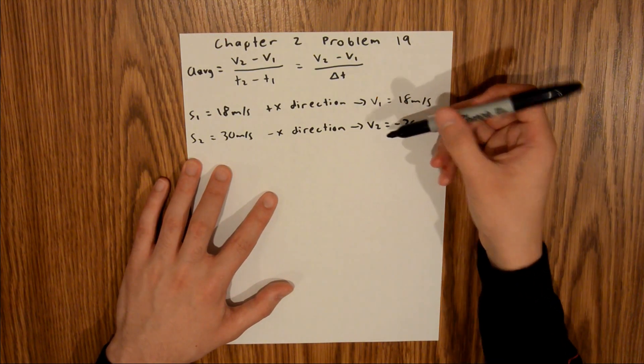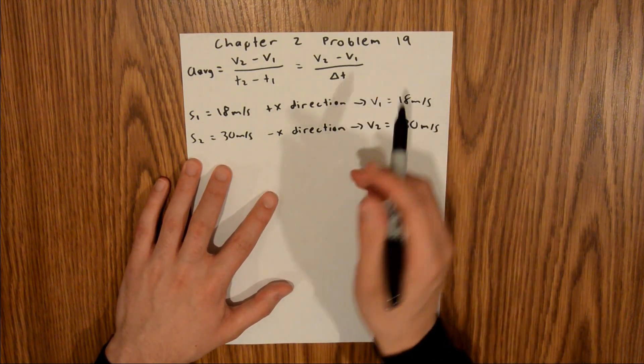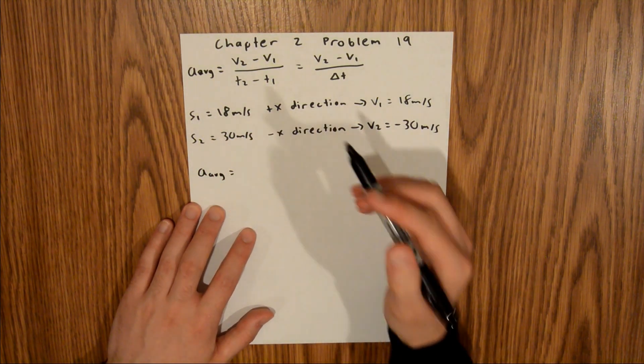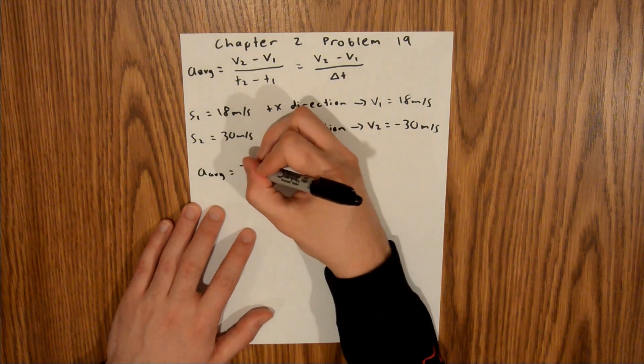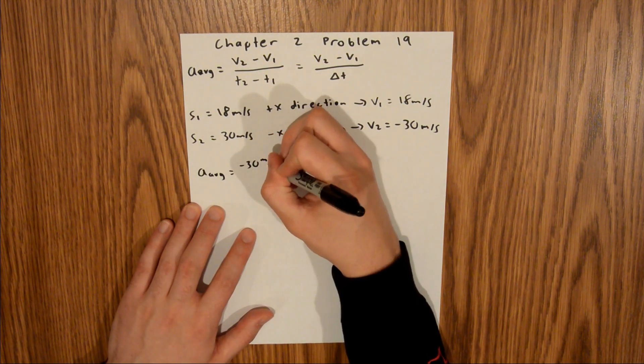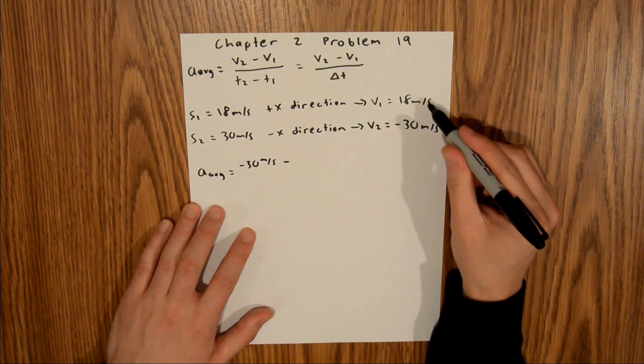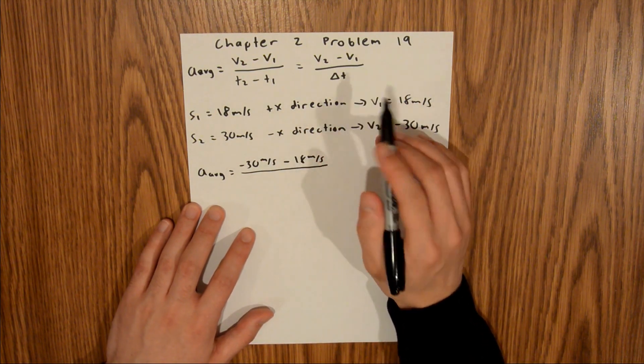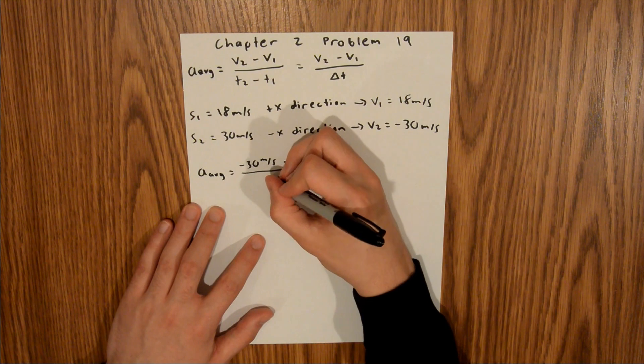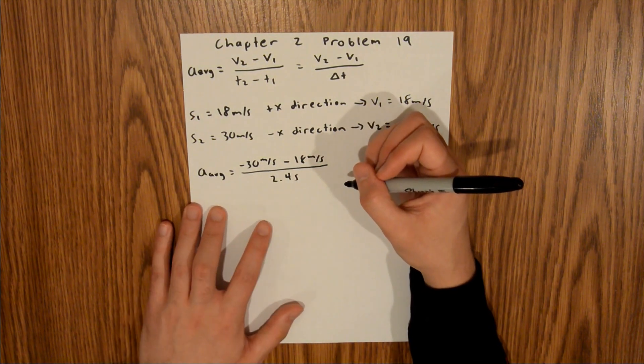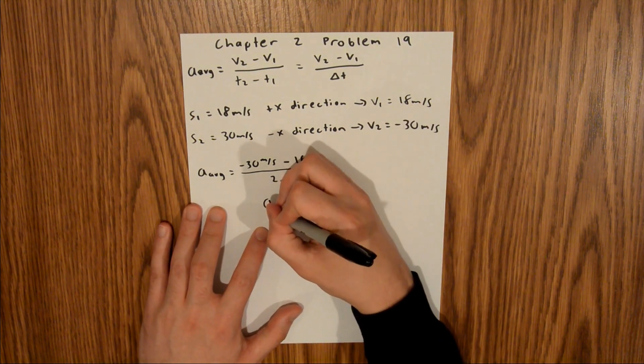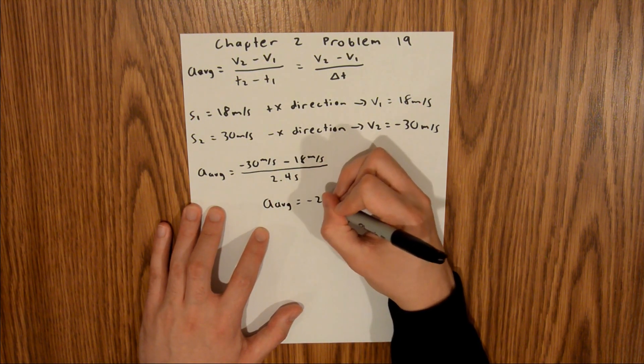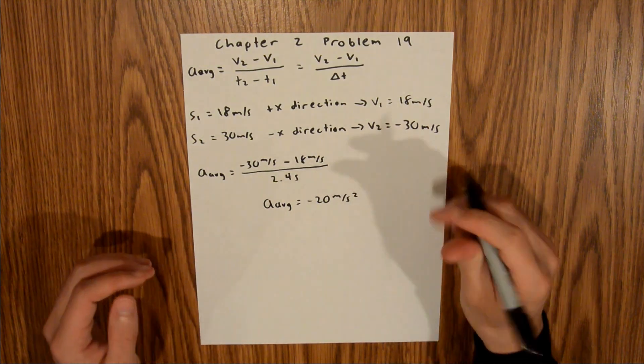And so now we have V1, V2, and we're given delta T, so we can solve for our average acceleration. So A average is equal to V2, which is negative 30 meters per second, minus V1, which is 18 meters per second, divided by our delta T, which we are given in the problem as 2.4 seconds. And if you plug that into your calculator, you will find that our average acceleration is equal to negative 20 meters per second squared.